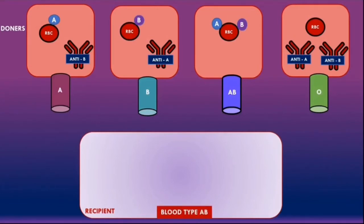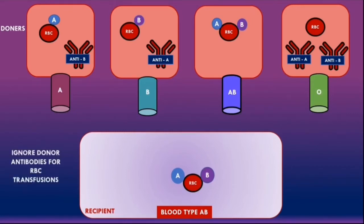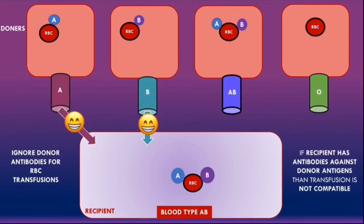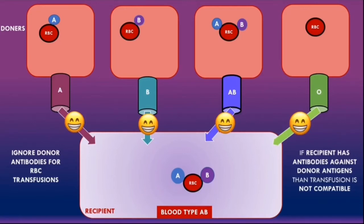For a recipient with blood type AB, the patient's red blood cells have A and B antigens but there are no anti-A or anti-B antibodies in the plasma. Because this recipient has no anti-A or anti-B antibodies, there is no risk of a hemolytic transfusion reaction with any blood type. Therefore, this patient can receive A blood, B blood, AB blood, and O blood — all are compatible.